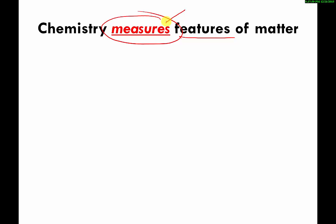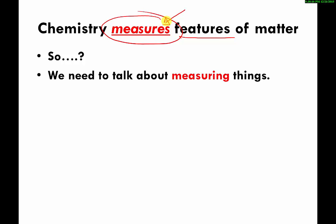We need to talk about how to measure things and the good and bad parts of that. That probably sounds like an incredibly boring topic, and that's because it is, but you're stuck with it. So chemistry measures features of matter. We need to talk about measuring things.